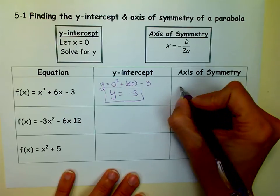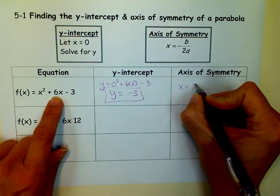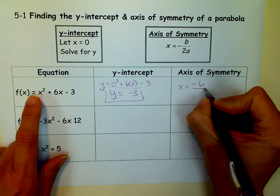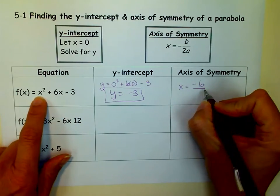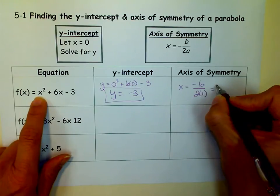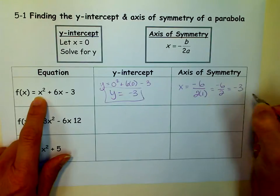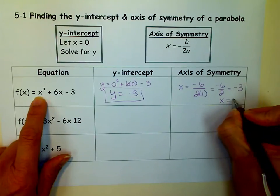The axis of symmetry is x equals the opposite of b. Our b is 6, over 2 times a. Our a is 1. So 2 times 1 is 2, so I have negative 6 over 2, and negative 6 divided by 2 is negative 3, so our axis of symmetry is negative 3.